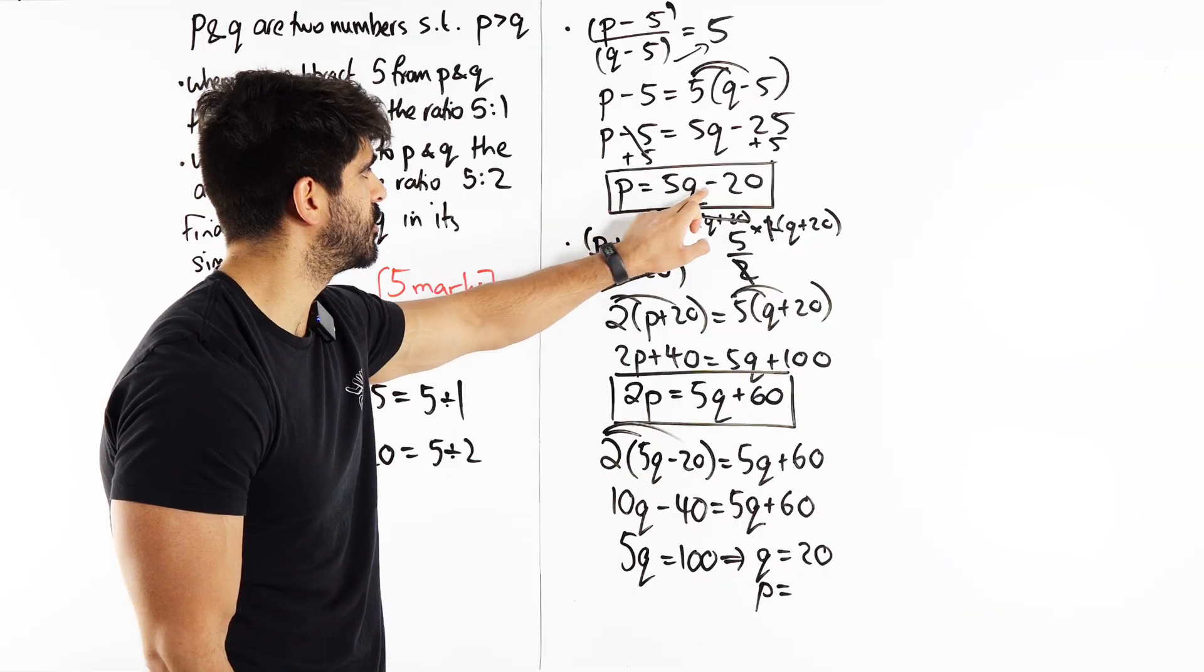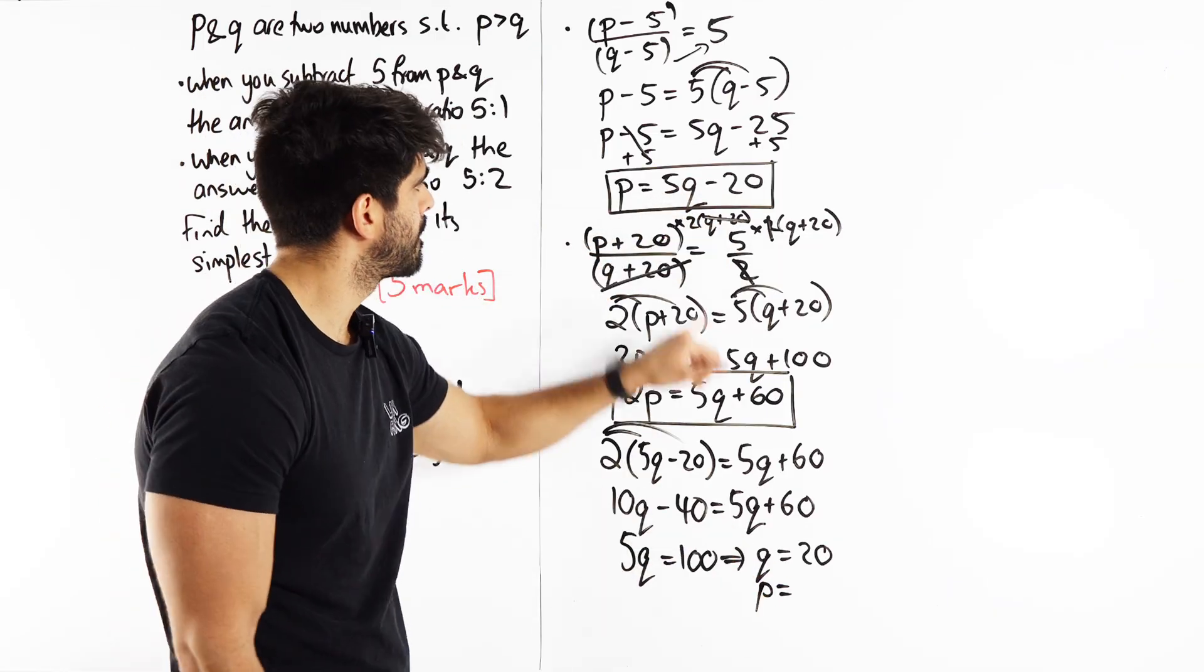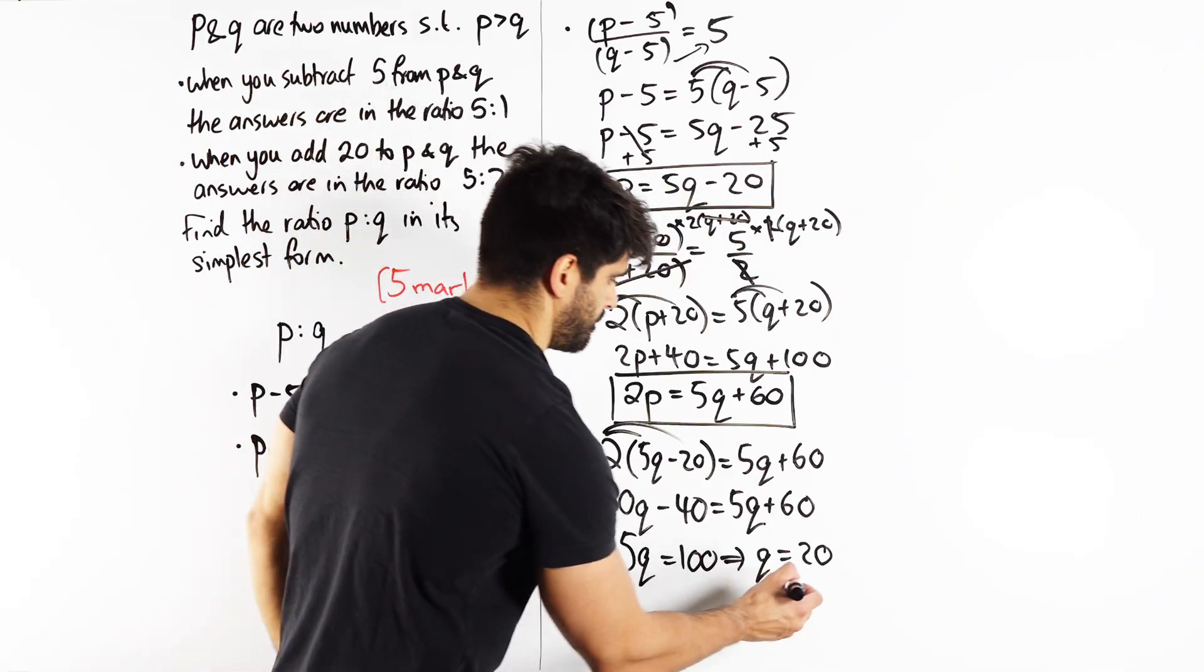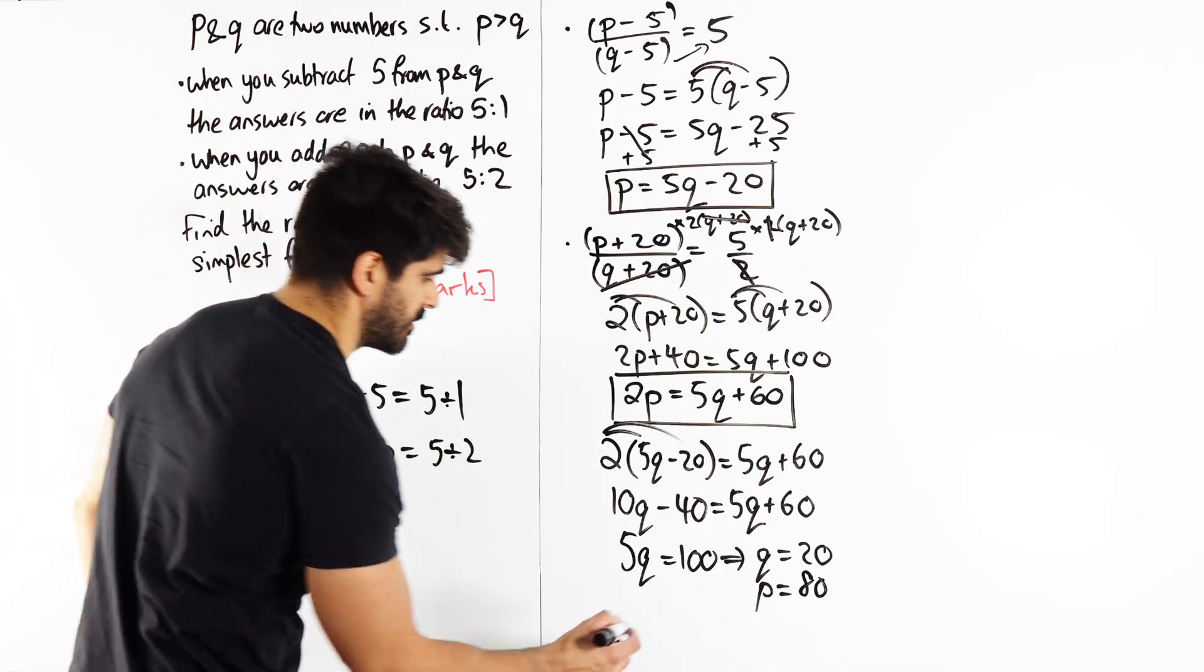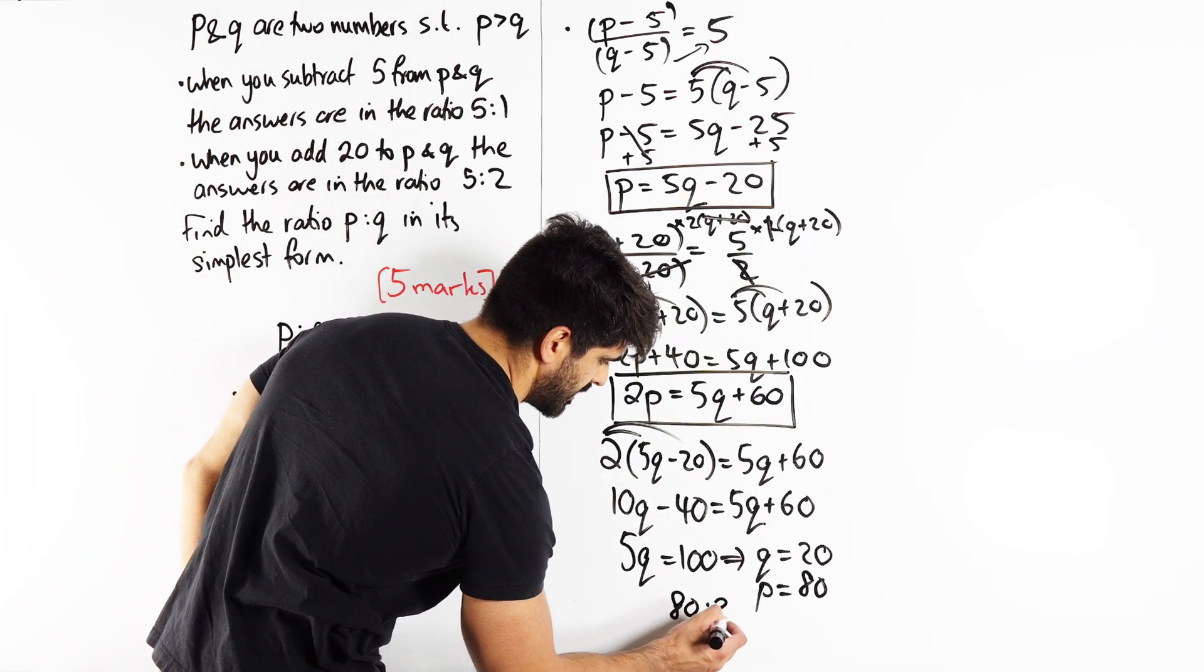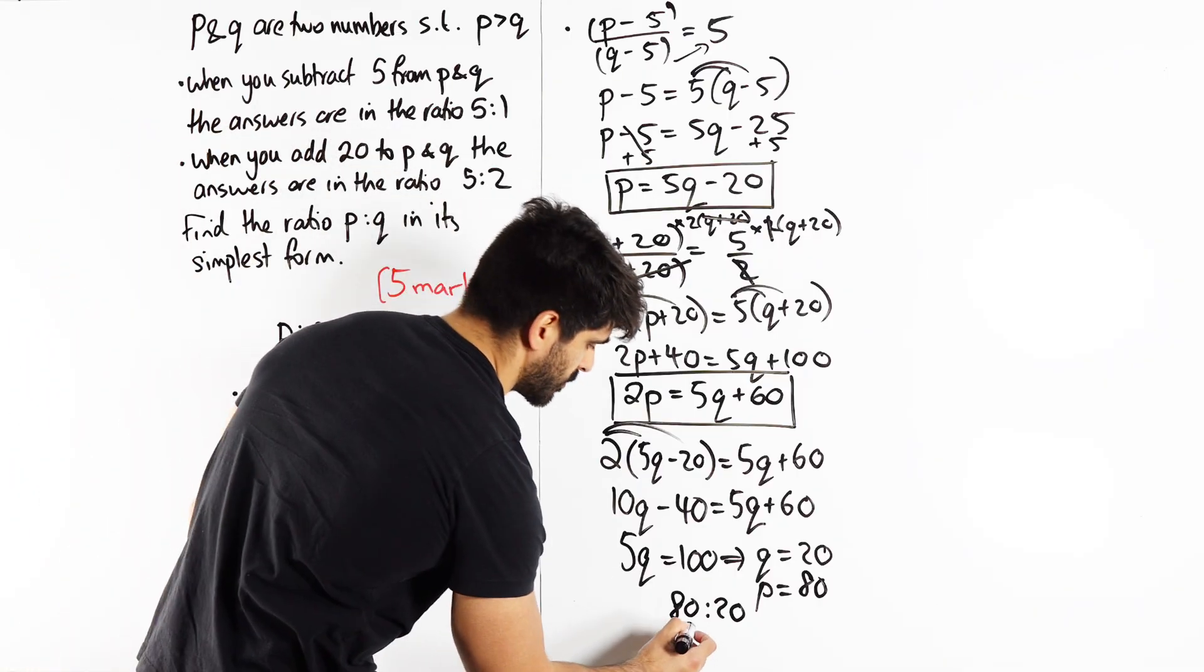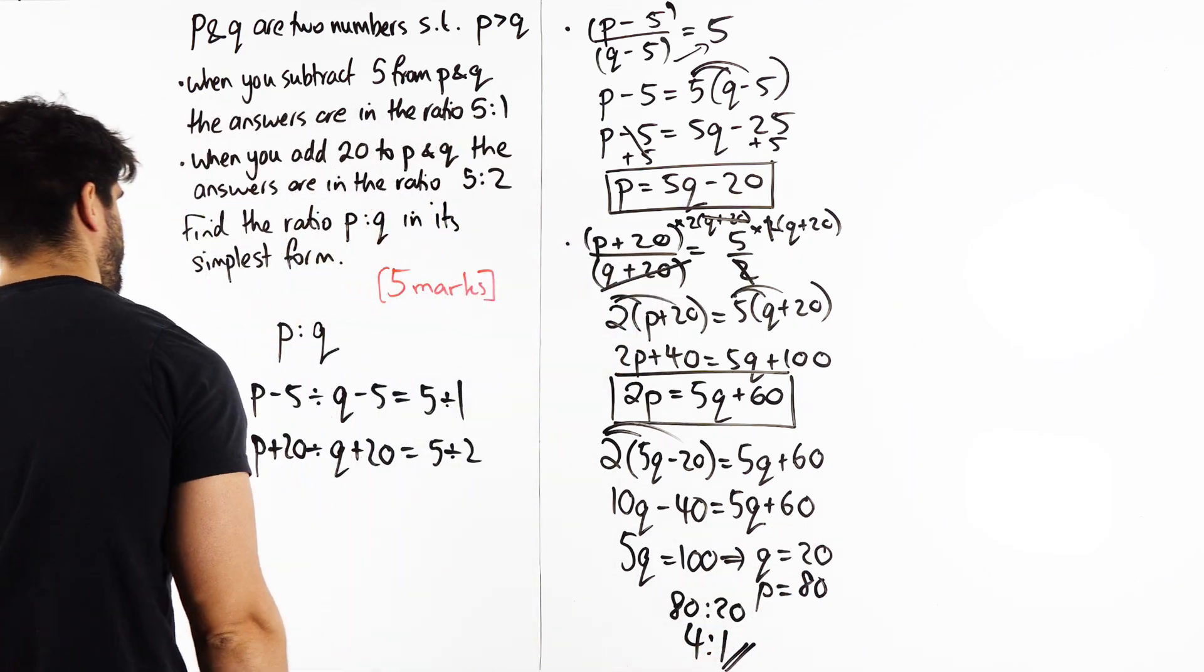And from there we can work out P by subbing into here. P is 5Q minus 20, 5 times 20, right? 5 times 20 is 100, minus 20 is 80. They want the ratio P to Q, so the ratio is 80 to 20. Divide by 20, we get 4 to 1. And that is our answer, my friends.